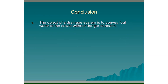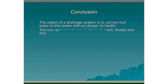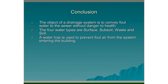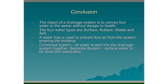Conclusion. The object of a drainage system is to convey foul water to the sewer without danger to health. The four water types are surface water, subsoil water, waste water and soil water. A water trap is used to prevent foul air from the system entering the building. In a combined system, all water is sent into the drainage system together. In a separate system, surface water is dealt with separately. Separate systems are the preferred option.